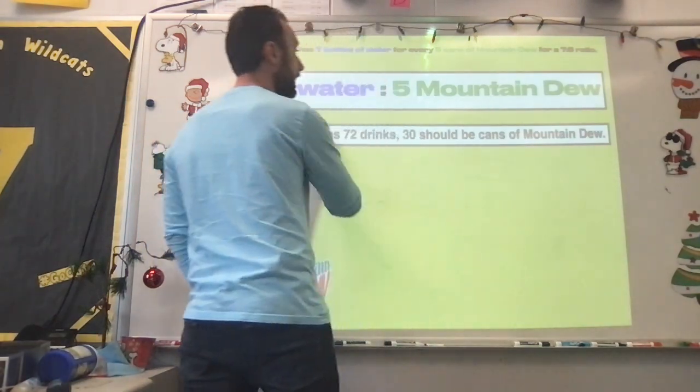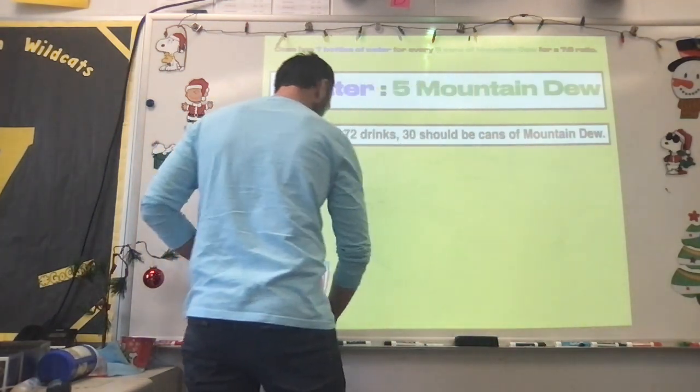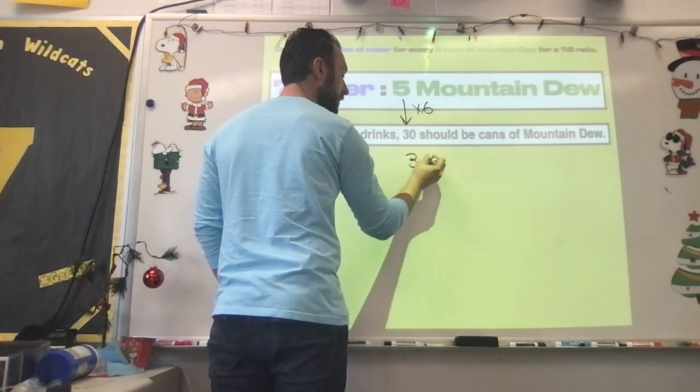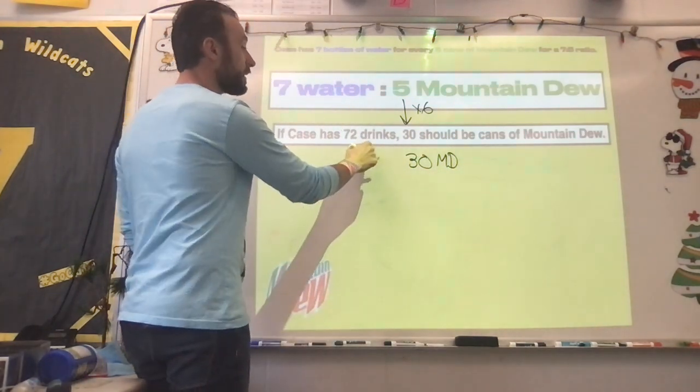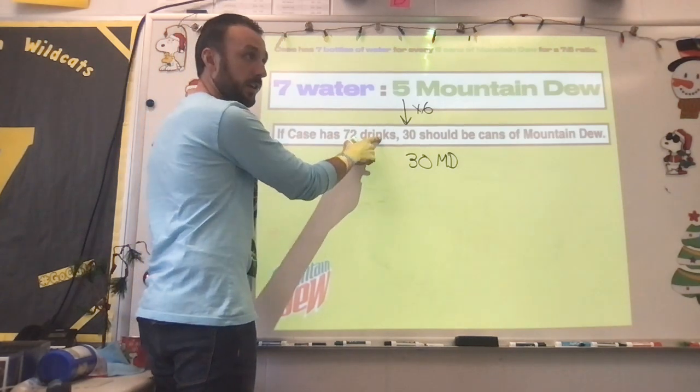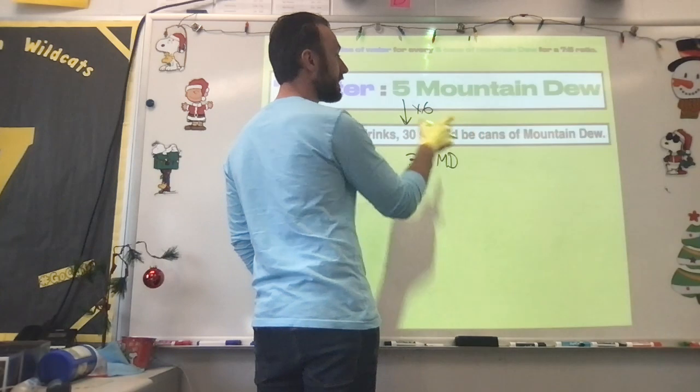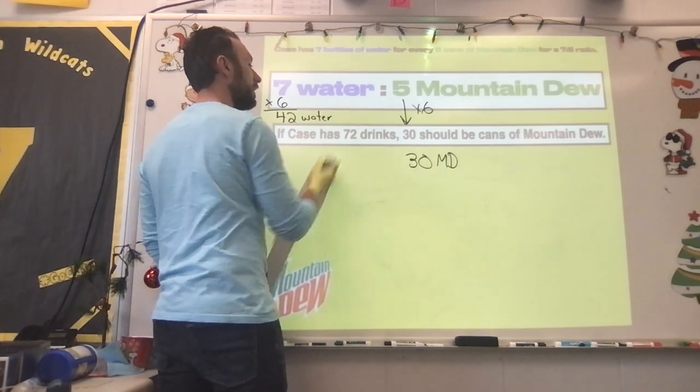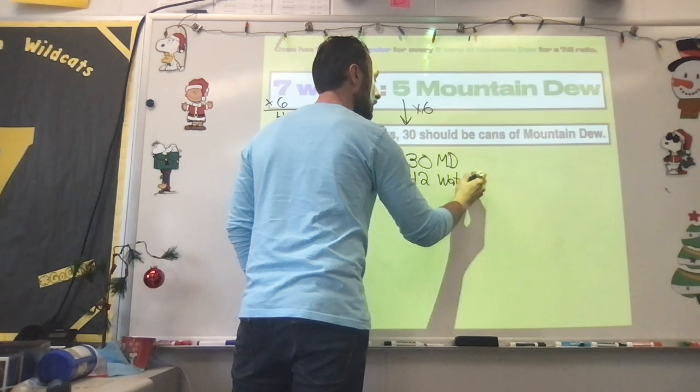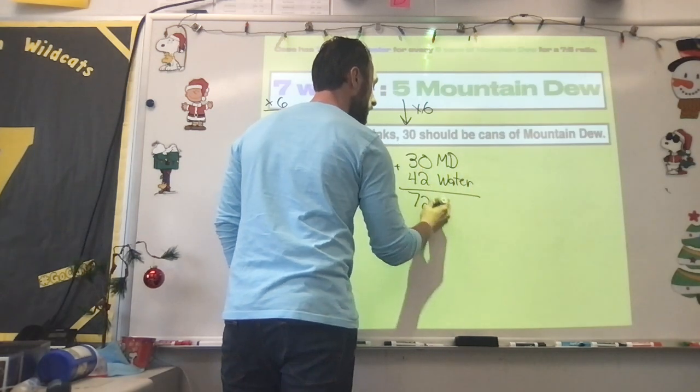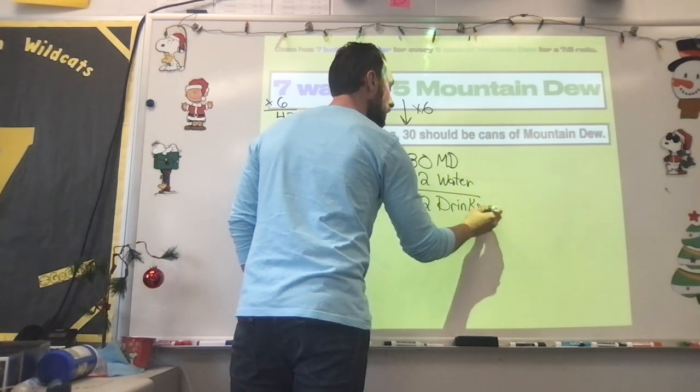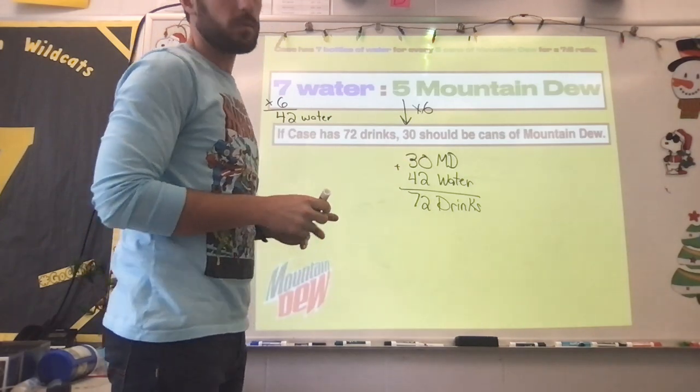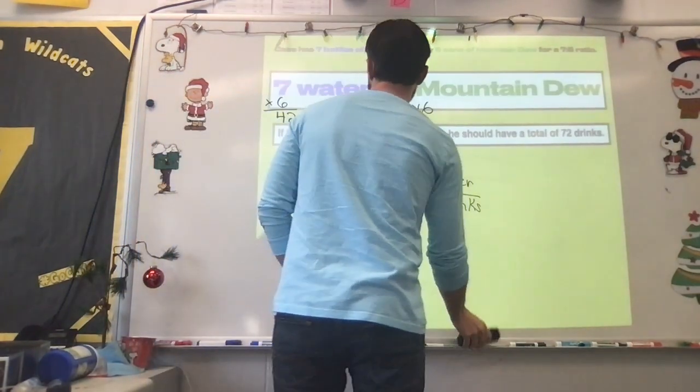he should have 30 cans of Mountain Dews. So same type of thing. Mountain Dew, Mountain Dew, I would say times six, and that would be 30 cans of Mountain Dew. This is drinks, so I'm not trying to multiply this to become this because this is water and this is drinks. Those are different labels. But if it's an equivalent ratio, I still need to multiply it by that factor of six. So times six would leave me at 42 water. If I add those together, that gives me a total of 72 drinks. So if Case has 72 drinks, 30 of them should be Mountain Dew. Yeah, that looks right.